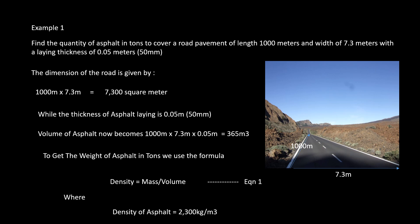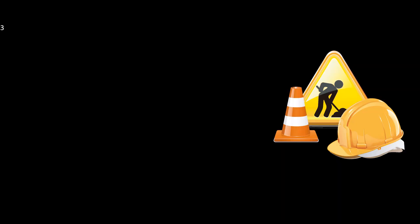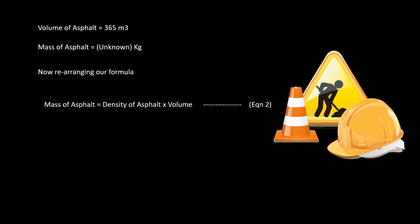To get the weight of asphalt in tons, we use the formula: density equals mass over volume — let us call this equation one. Here, density equals 2300 kilograms per meter cubed and the volume of asphalt equals 365 cubic meters. The mass of asphalt is what we are looking for.